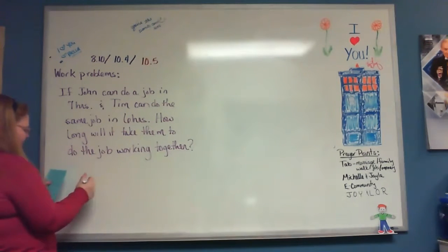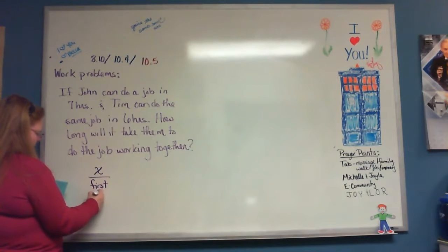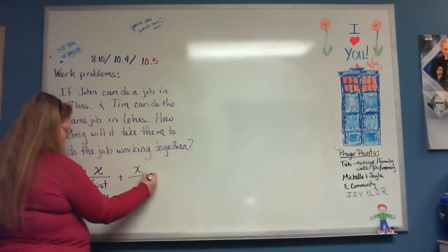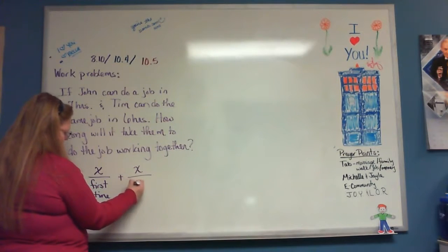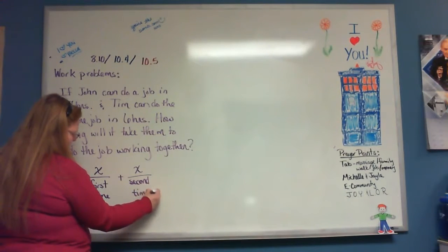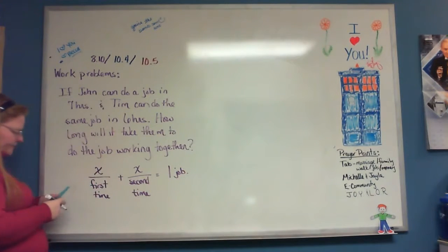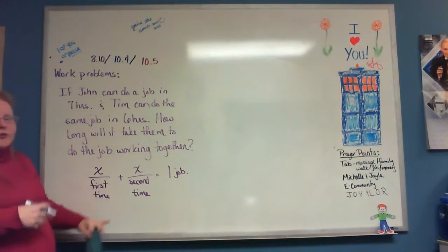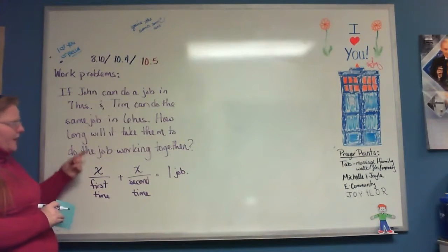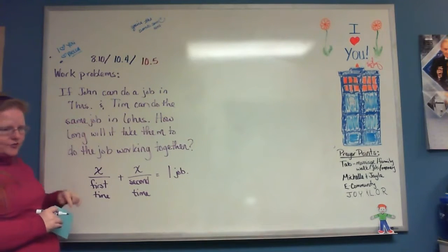Whenever you see a work problem it's always x over the first time plus x over the second time equals one job. It's a plus because they're working together to do this. The first time is how long it takes the first person to do it and the second time is how long it takes the second person to do it.